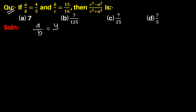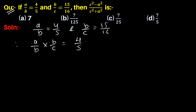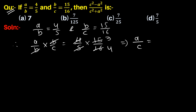Given that a upon b is equal to 4 upon 5 and b upon c is equal to 15 upon 16. Therefore, a upon b multiplied by b upon c equals 4 upon 5 into 15 upon 16. Here b and b cancel, 15 is cancelled by 5 giving 3, and 4 and 16 giving 4. So a upon c is equal to 3 upon 4.